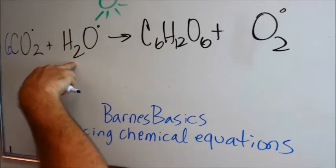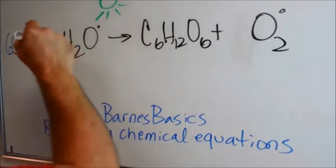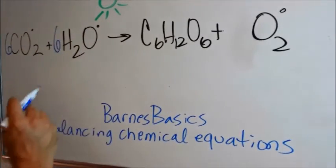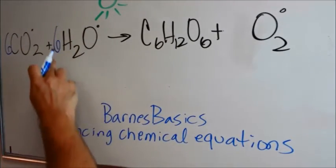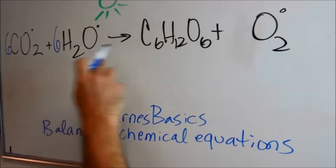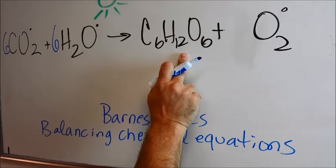There are two hydrogens on the left, and there are 12 here on the right. So the number 6 would be beautiful. Once again, 6 times 2 is 12. We have 12 hydrogens here.